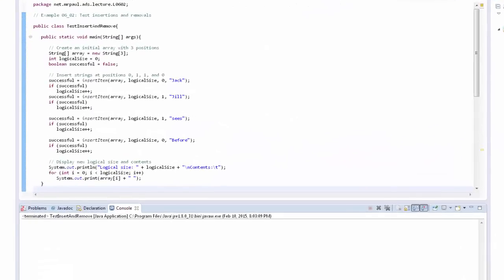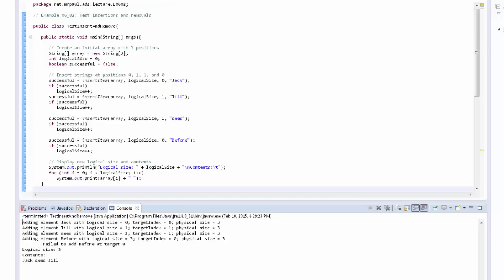If you end up opening up this code from the distribution files for the lecture, you can implement your own insert and remove methods. For mine, I included some illuminating print statements. When I run mine, this is what I get. I end up with the array jack, seize, Jill. That makes sense because the fourth insertion that I'm trying to do, where I try to insert the word before at element zero - well, my array is only three elements long. So if I've already inserted jack, Jill, and seize, the insertion of before should return false and just not work, because I can't insert a fourth element into an array that's already full, at least the way I've defined my insertion method.